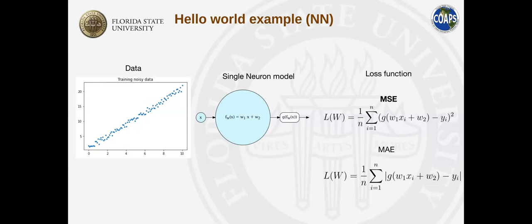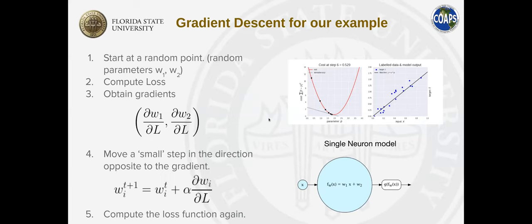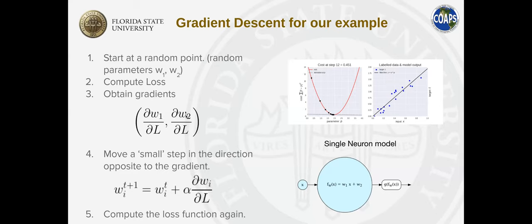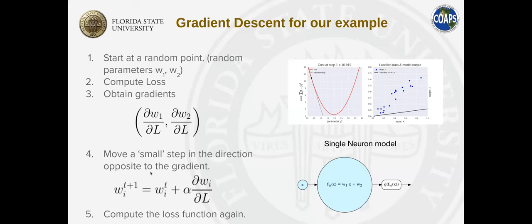Neural networks learn weights using flavors of gradient descent. We initialize the weights randomly, compute the loss function, then obtain the gradients of those weights with respect to the loss function. Modern machine learning libraries compute these gradients using backpropagation automatically — we don't have to implement it every time. That's why there has been a boom of machine learning methods in many different areas. Finally, we modify the weights in the direction opposite to the gradient and repeat iteratively.